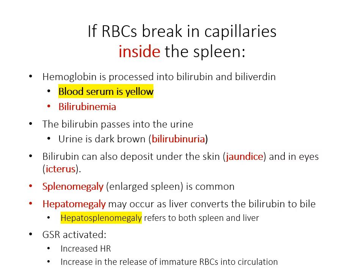But because there's an increase in the number of cells that are lysed in a hemolytic anemia, you get an increase in bilirubin and biliverdin. We focus on bilirubin because there's going to be an increase in the amount released into the blood, and we term this bilirubinemia.